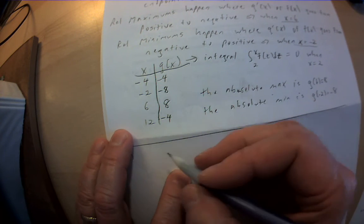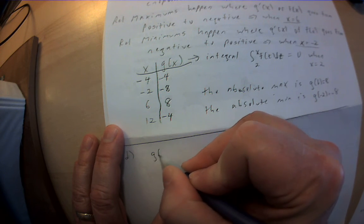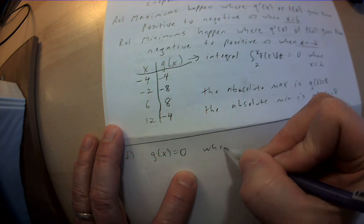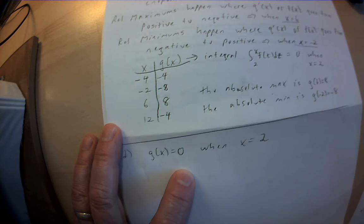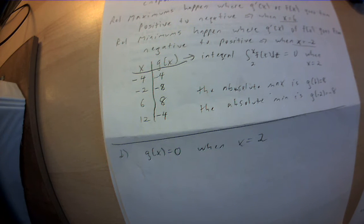As I told you before, g of x equals 0 when x equals 2.